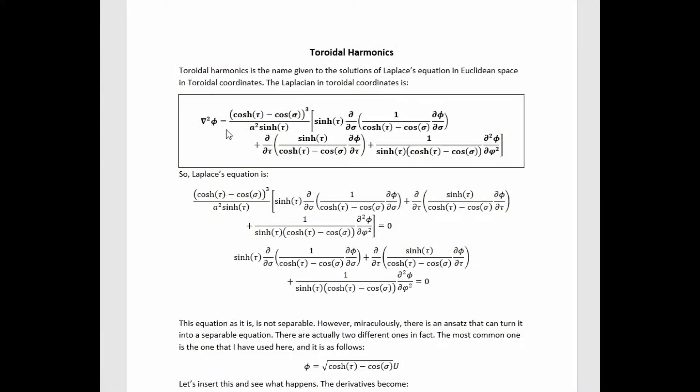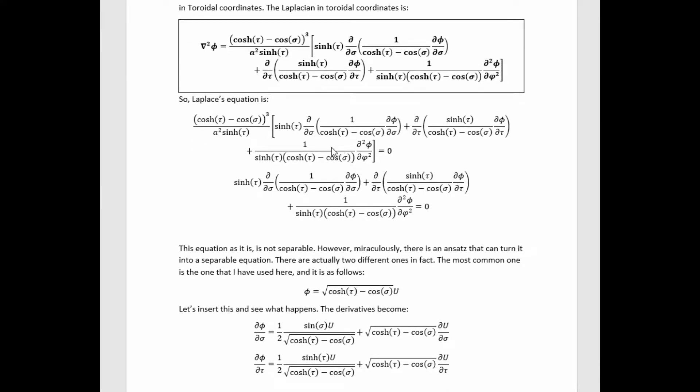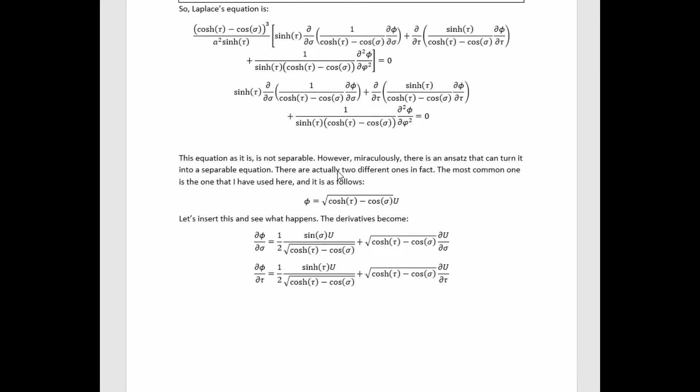If we aim to solve Laplace's equation in toroidal coordinates for the toroidal harmonics, we first need the Laplacian in toroidal coordinates. I've calculated this in a previous video using covariant derivatives and the three-space Euclidean metric in toroidal coordinates, but I've also just written it right here, and you can look it up quite easily. So setting that equal to zero gives Laplace's equation. We can divide out this factor, which gets us here. This equation, as it is, is not separable.